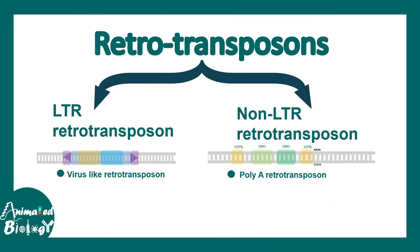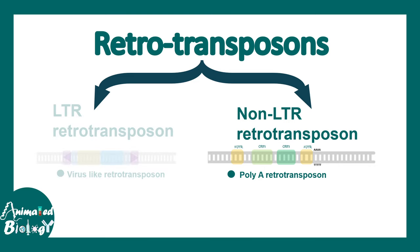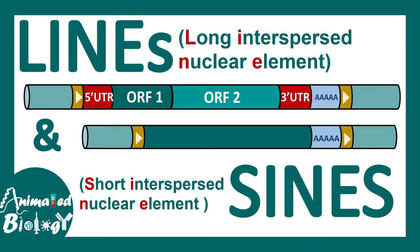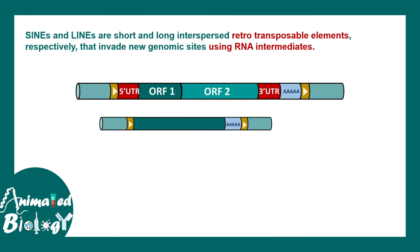Apart from retroviral or LTR retrotransposons, there are non-LTR retrotransposons. When we talk about non-LTR retrotransposons, LINEs and SINEs come to mind. LINE stands for long interspersed nuclear element and SINE stands for short interspersed nuclear element. SINEs and LINEs don't have LTRs, but they have a poly-A tail and 5' and 3' UTRs, which are pretty much like a eukaryotic gene.